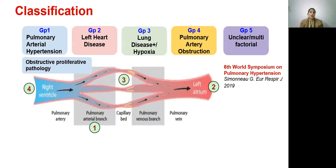Pulmonary hypertension is broadly classified into five groups based on the site and underlying pathophysiology. Group 1, pulmonary arterial hypertension, is characterized by an obstructive proliferative pathology at the level of the pulmonary arterial branch. Group 2 is due to left heart disease affecting the left atrium. Group 3 is due to lung disease or hypoxia affecting the capillary bed. Group 4 is due to pulmonary artery obstruction. Group 5 is unclear or multifactorial.